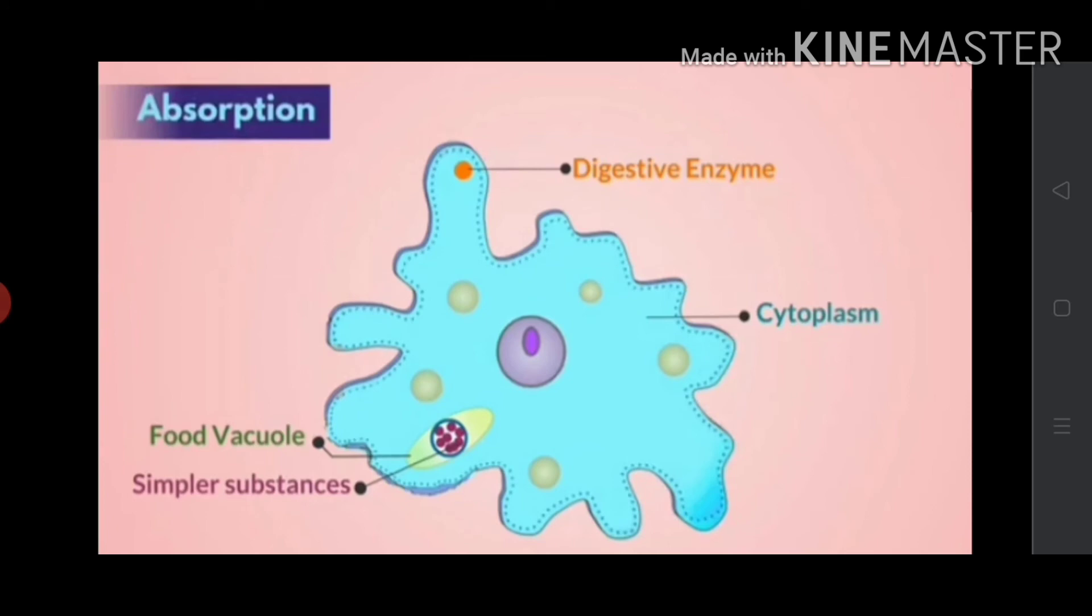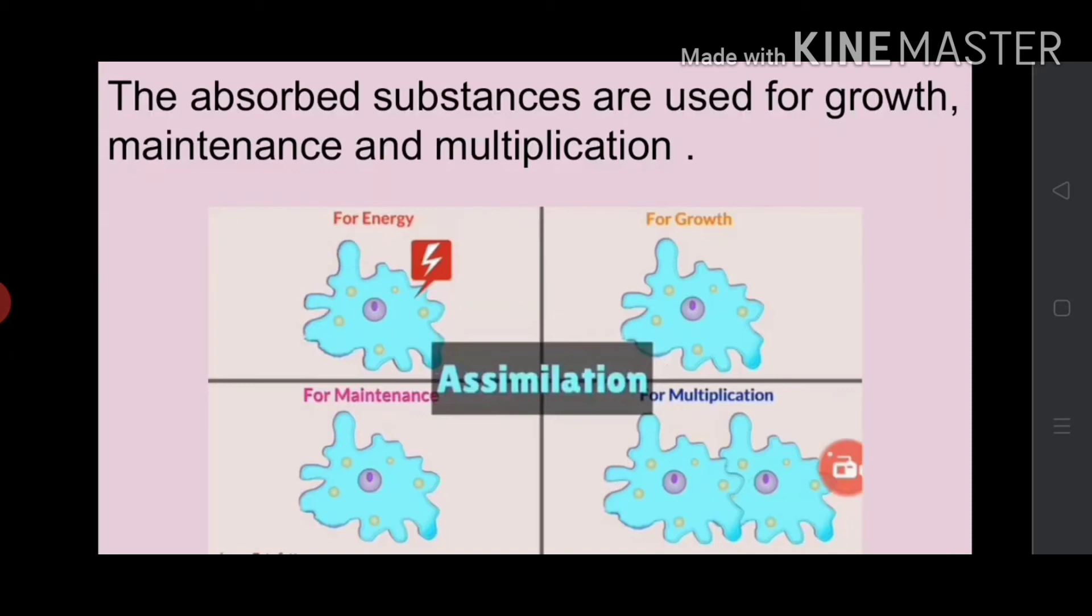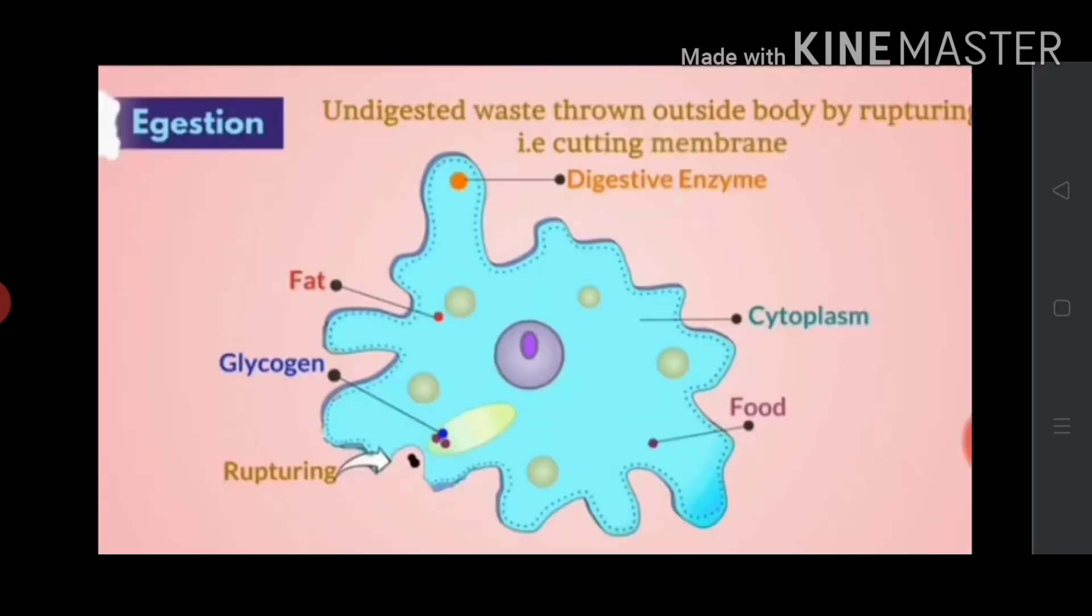The undigested waste remains in the food vacuole. The food entering the cytoplasm is used for energy, growth, maintenance, and for multiplication. This is called assimilation.